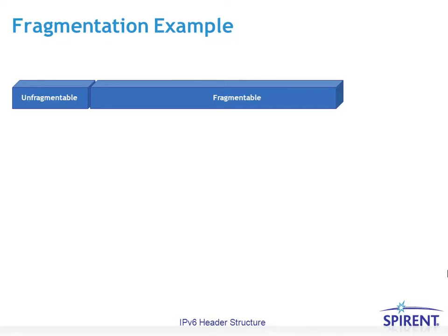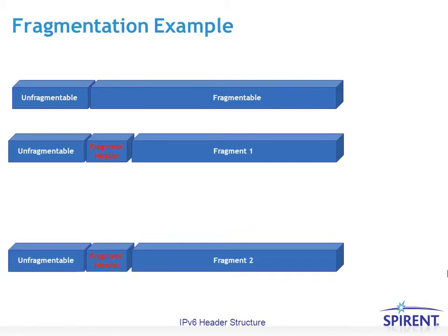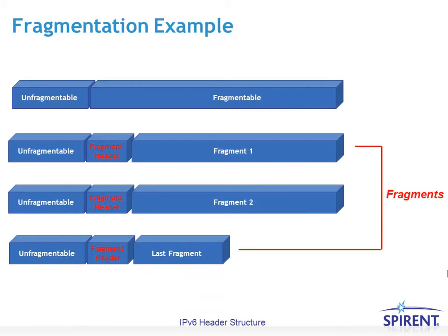As an example of fragmentation, you have the unfragmentable part — the IPv6 header — and then the fragmentable part, which is all the other data following. The fragmentable part can be broken up, and the fragment extension header is inserted in between. Using fields such as the ID and offset, it knows which fragment is which — fragment 1, fragment 2 — and then using the flag bit, it knows when the last fragment has arrived.